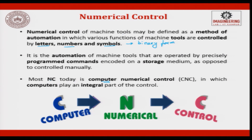Today we do not call it NC; we call it CNC, in which the computer plays an integral part of control. A computer has storage, retrieval, and the freedom to edit. With these three capabilities, we are able to change and customize the program towards the output part required. Computer evolution in terms of memory, retrieval, and editing gave a big breakthrough in numerical control.